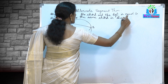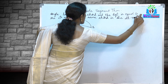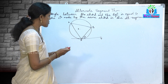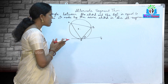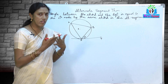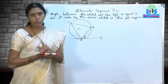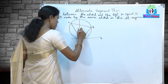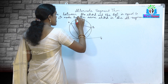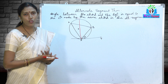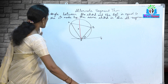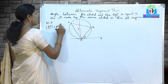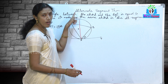Now I will do a small construction to complete the proof. I am going to consider the center of the circle and draw a diameter through the point of contact P. Let me name the other end as C, so PC is the diameter passing through the point of contact. We need to prove that angle BPT is equal to angle PAB.